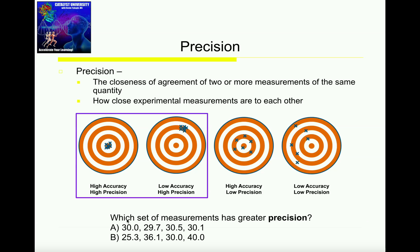Now, here's a question for you. Which set of measurements below has the greater precision, A or B? Well, let's take a look at these. A has measurements 30.0, 29.7, 30.5, and 30.1.